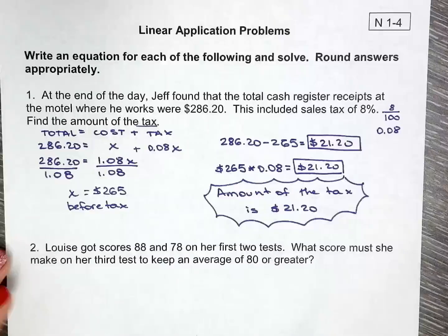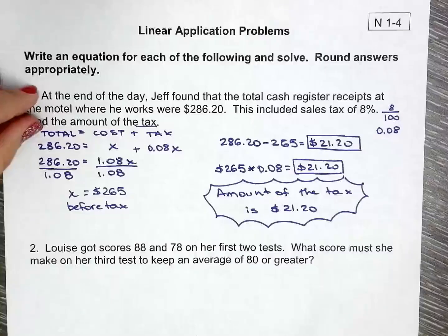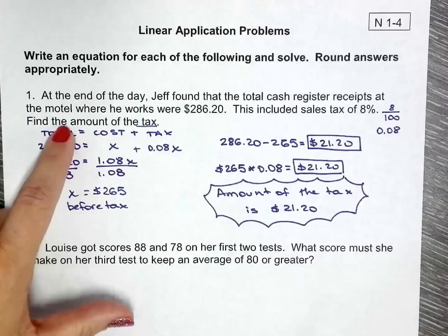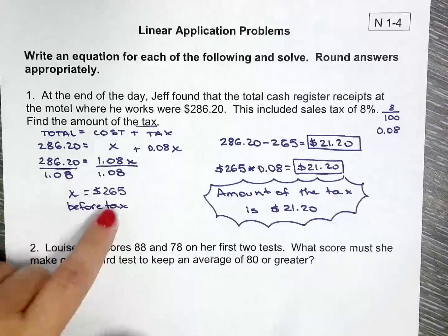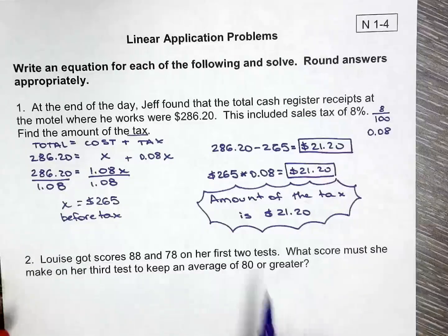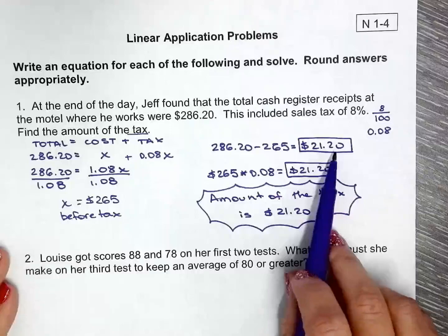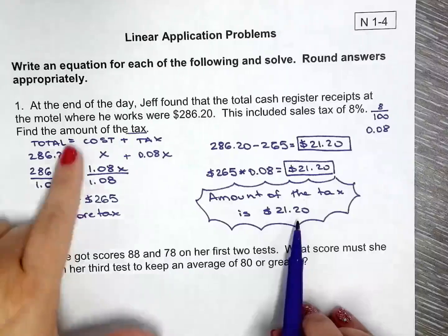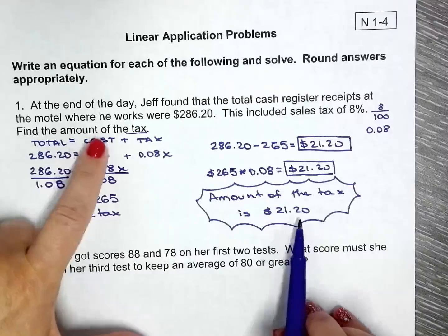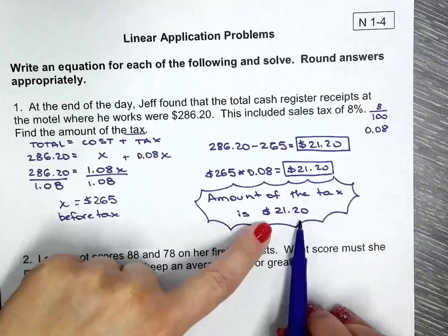So every time you're answering a word problem, just keep your eyes on the question because it's really easy to lose focus on the mission. It's really easy to go $265 done, that's my answer. So watch out for that. If you're not sure and you just box the answer, just ask yourself, what is the question? The question was asking the amount of tax, so the amount of tax is that right there.